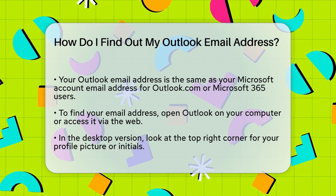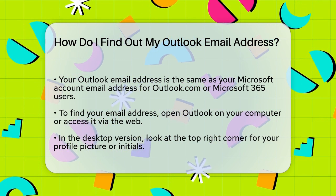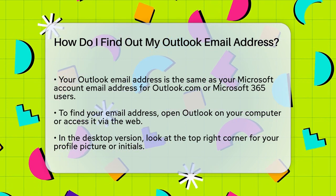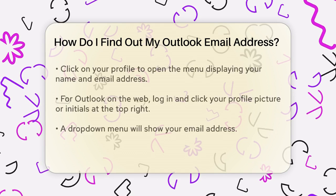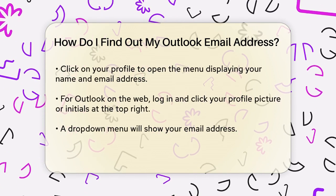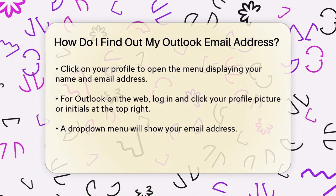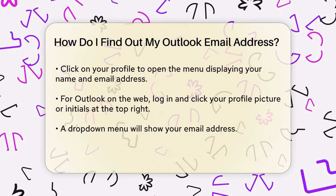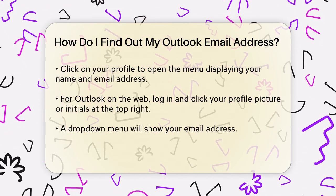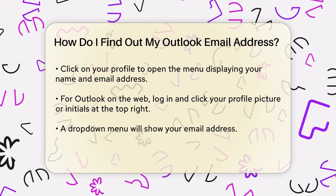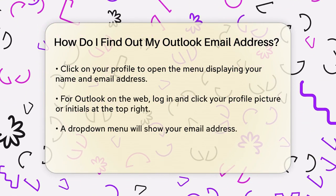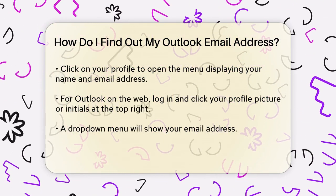To find your email address, you can follow these simple steps. Open Outlook on your computer or access Outlook on the web. If you're using the desktop version, look at the top right corner of the Outlook window. You should see your profile picture or your initials. Click on this to open your profile menu. In this menu, you'll see your name and your email address listed.